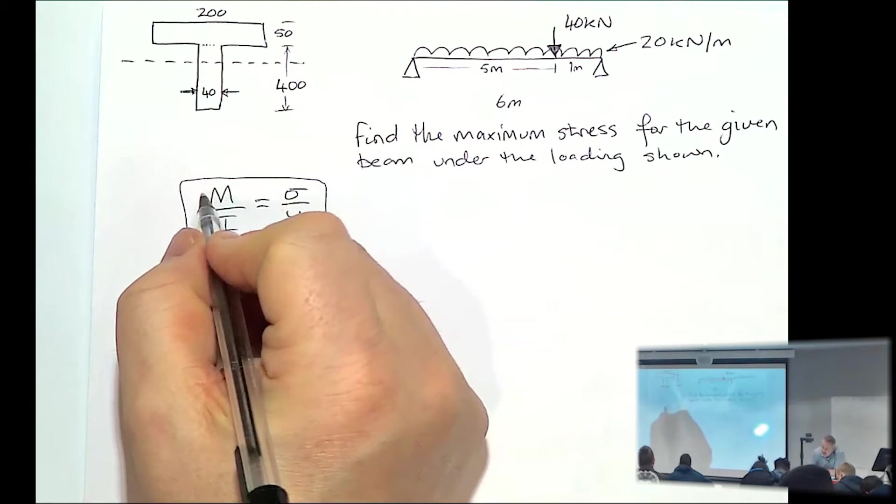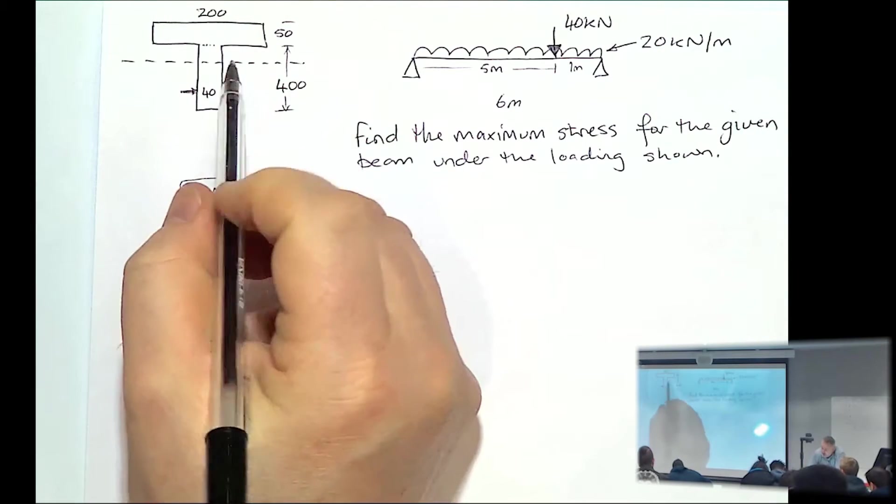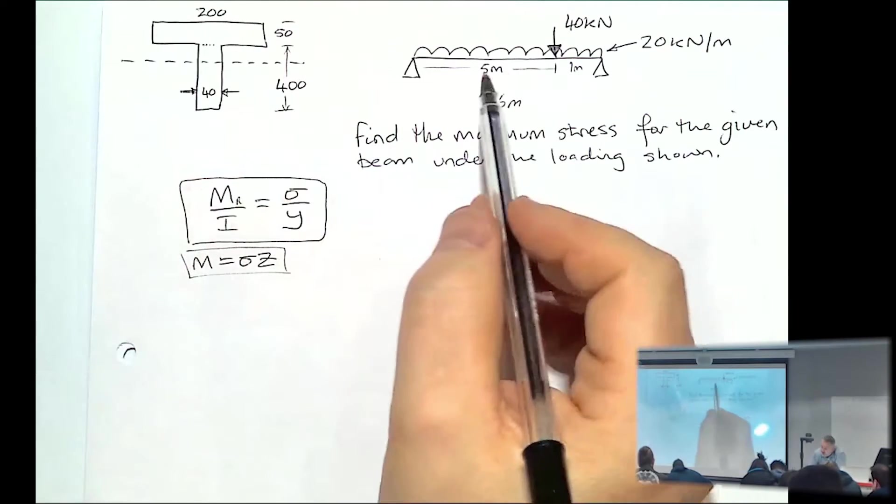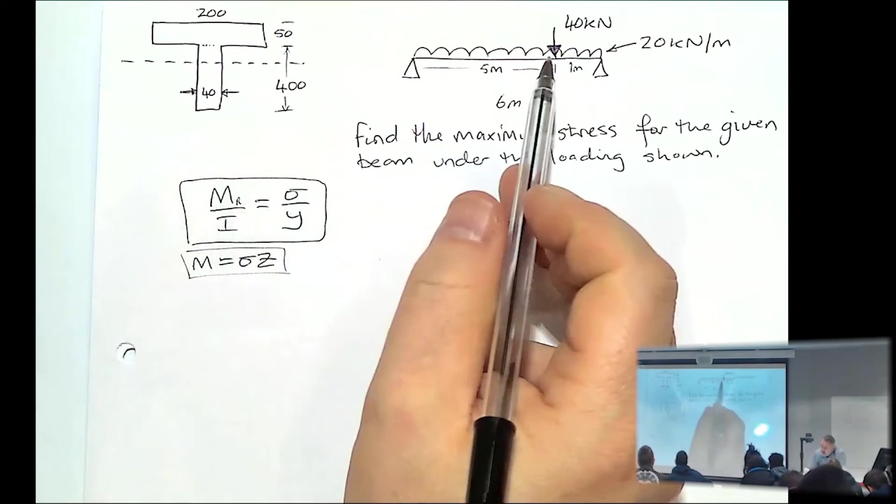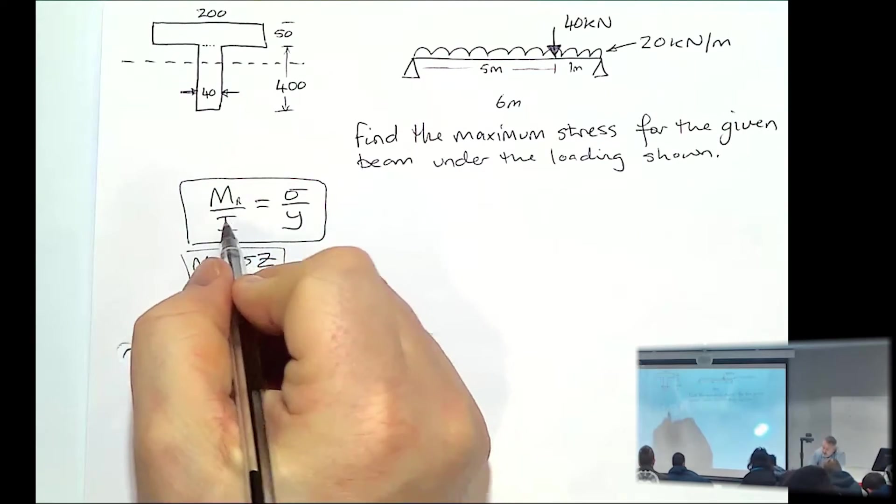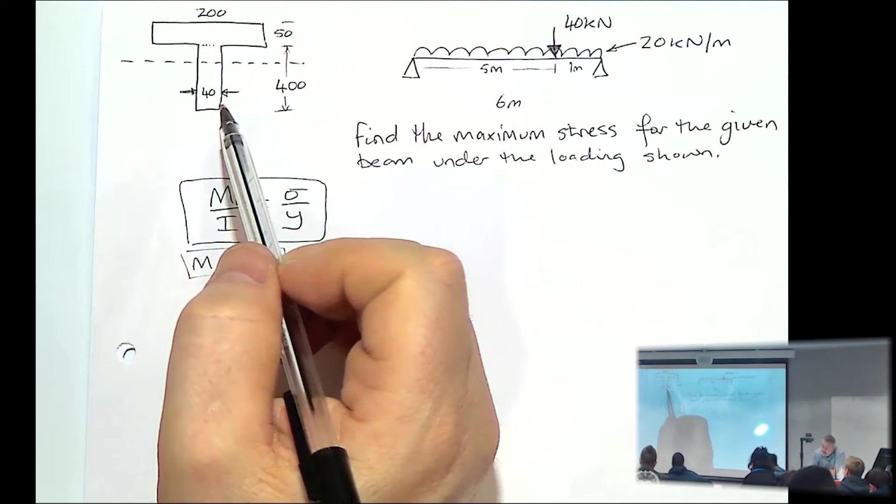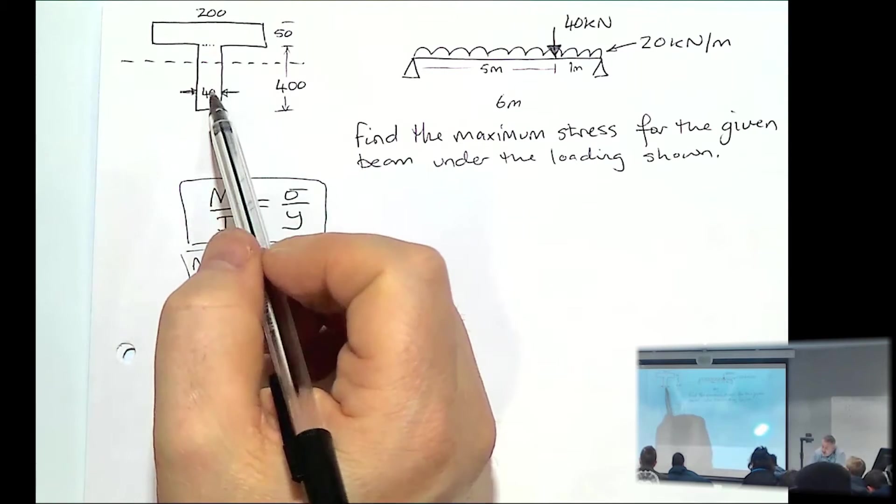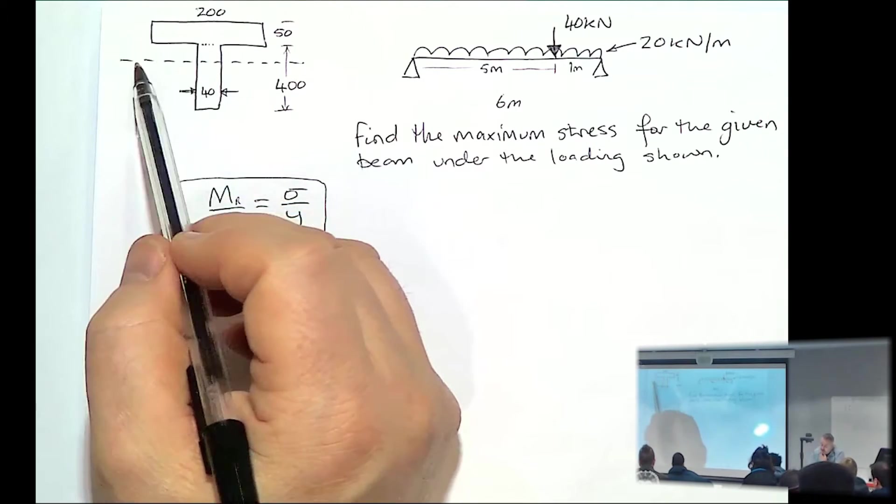So this M, that's the moment of resistance of this beam. But what we'll do, we'll work out what the moment is, the maximum moment, and we'll make the maximum moment equal the moment of resistance. Our I value, so we're going to have to work out the second moment of area for a T shape. In order to work out the second moment of area, we need to try and work out what the centre of gravity is, so the location of the neutral axis.